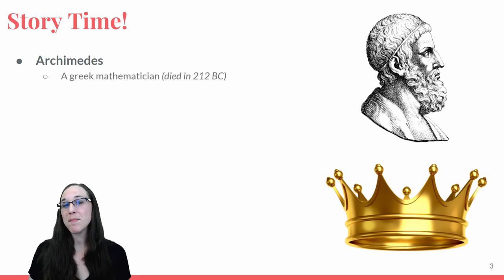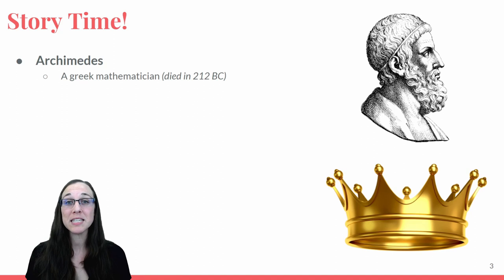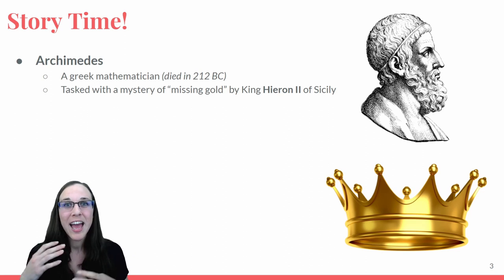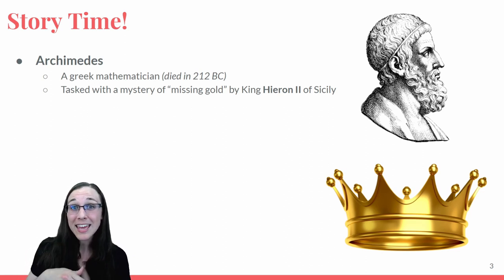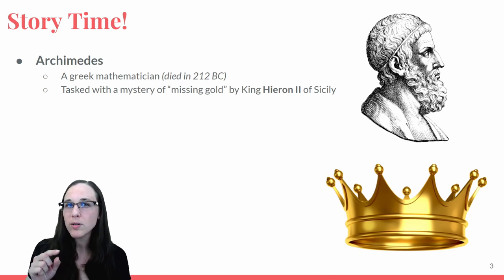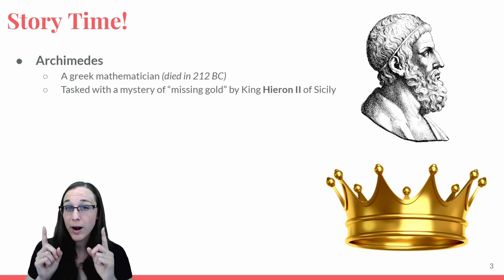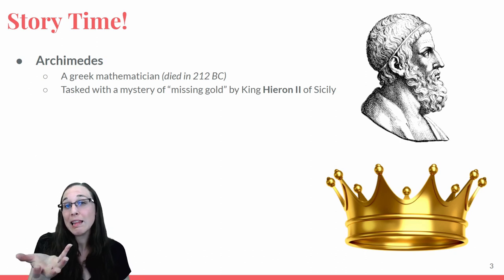Archimedes was a Greek mathematician who died in 212 BC. He is the person coined with the typical Eureka phrase. The reason that came about is because he was tasked by the king to determine whether or not the goldsmith had cheated the king on making his gold crown.